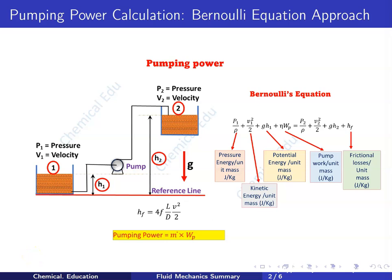Today I will talk about pumping power calculation using Bernoulli's equation. Here we have two reservoirs: reservoir one and reservoir two. Reservoir one has some liquid which is lifted through a pump. A pipe connects reservoir one to the pump — that is called the suction pipe — and from the pump to reservoir two, that pipe is called the delivery pipe.